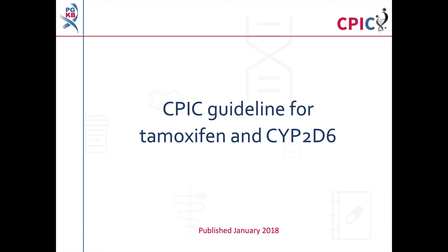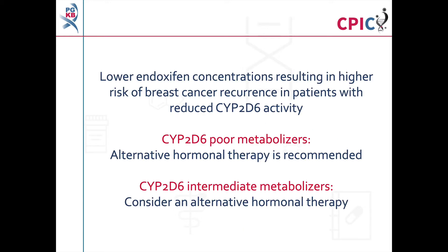This is a summary of the CPIC dosing guideline for tamoxifen and variation in the gene CYP2D6. This guideline was published in January 2018. Patients with reduced CYP2D6 function may have lower concentrations of endoxifen, the active metabolite of tamoxifen, which can result in increased risk of breast cancer recurrence. As a result, the guideline recommends an alternative hormonal therapy for CYP2D6 poor metabolizers. An alternative hormonal therapy should also be considered for CYP2D6 intermediate metabolizers.